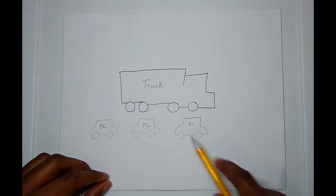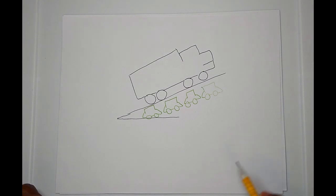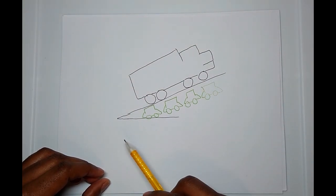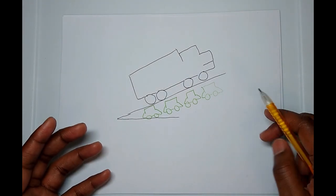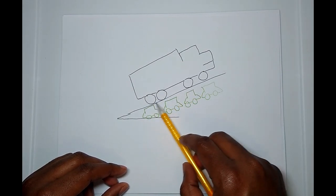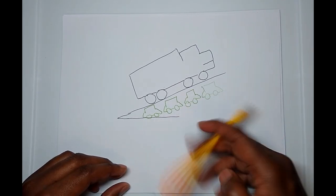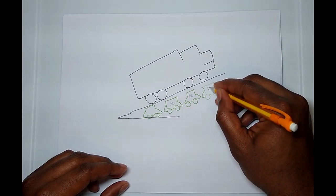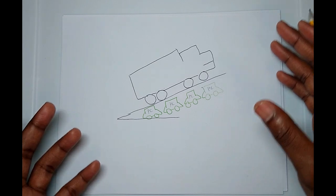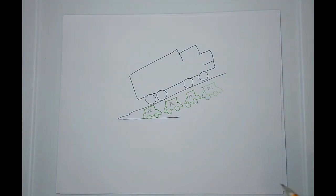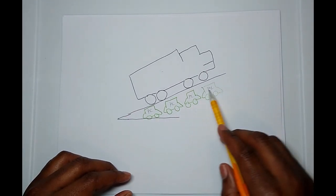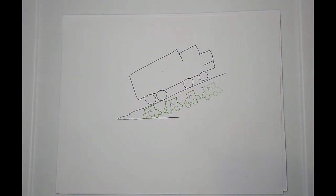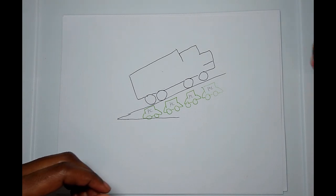Now take that same truck and allow it to travel uphill on a steep incline — the number of passenger cars that can travel in that same amount of space increases, because that truck is going to slow down. It'll be harder for that truck to travel at a certain speed up a steep incline, but passenger cars will be able to do it at a much easier pace. Therefore, more passenger cars will fit in the same moving space as a truck. The same applies for vehicles traveling downhill.